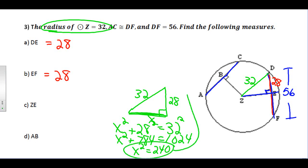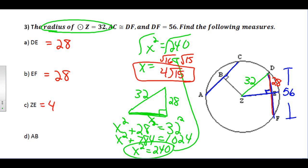I move my work up to the top up here. I have x squared equals 240, so when I square root, I get x equals the square root of 240. I can reduce that. 240 splits up into 16 and 15, so the square root of 16 times the square root of 15 would be four square roots of 15. So that makes ZE four square roots of 15.